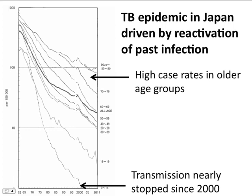An illustration of the problem comes from Japan, where TB transmission levels were very high after World War II, resulting in a large proportion of the population acquiring infection. The graph shows TB rates by age group over time since 1962. TB incidence rates are two orders of magnitude greater in the older age groups compared with the younger age groups. There is hardly any transmission now, as shown by the extremely low incidence in children since the early 2000s. However, all people who were infected decades ago continue to develop the disease at a rate now similar to that observed in developing nations with a high burden of TB. The problem of persistent TB incidence due to reactivation of past infection is naturally aggravated by the aging of the population and increasing life expectancy.